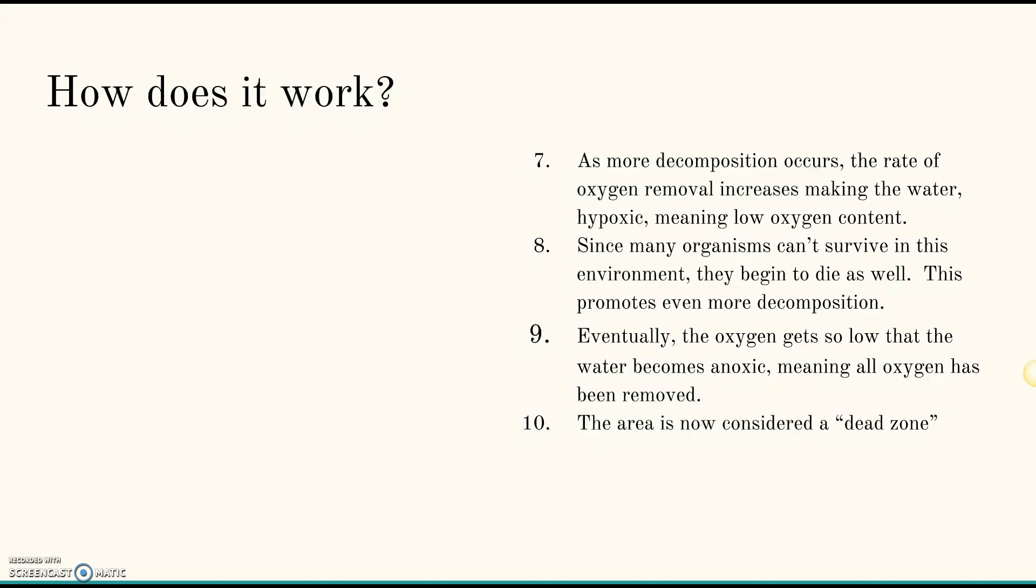Since no more new oxygen is being put into the water because the plants are not reproducing that are inside that water because they're now dead, the oxygen level continues to drop down lower and lower. Eventually what happens inside the water is it becomes anoxic. When it becomes anoxic, and that's this word right here in number nine, it means all the oxygen has been removed or nearly all the oxygen has been removed. It's been lowered down to such a level that nothing can no longer live in that water. And this is where we end up with our dead zone.